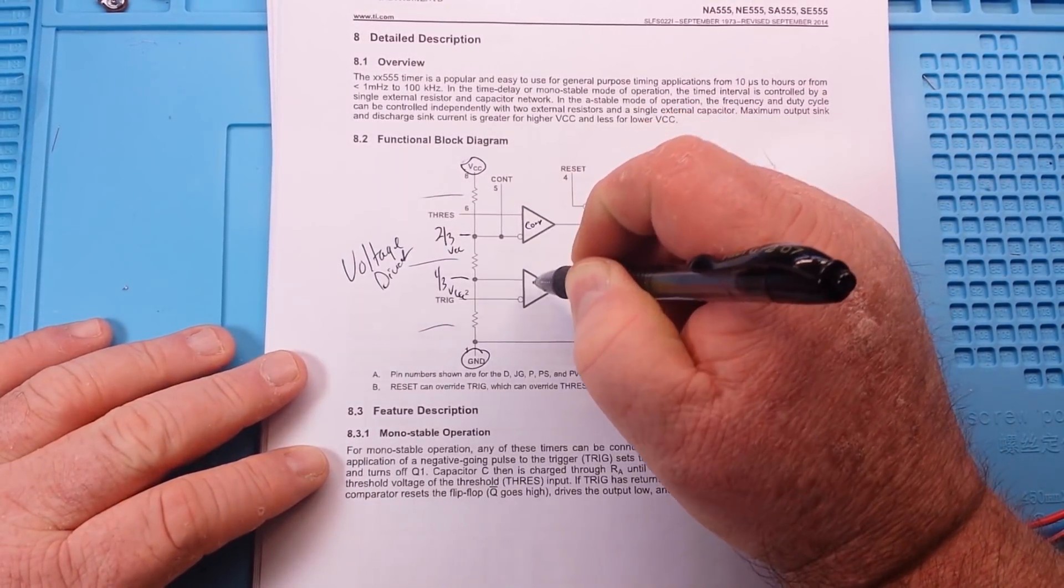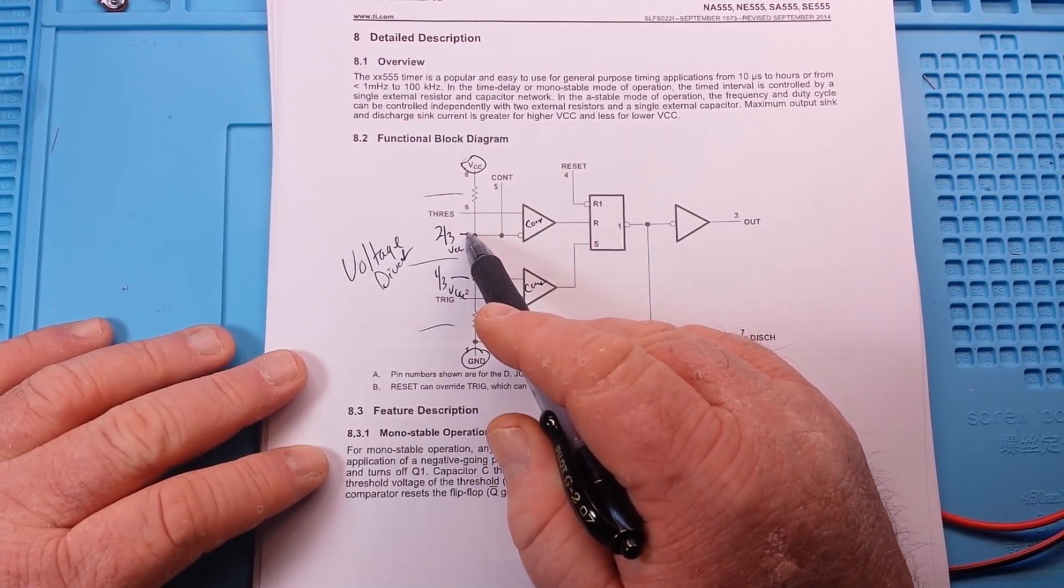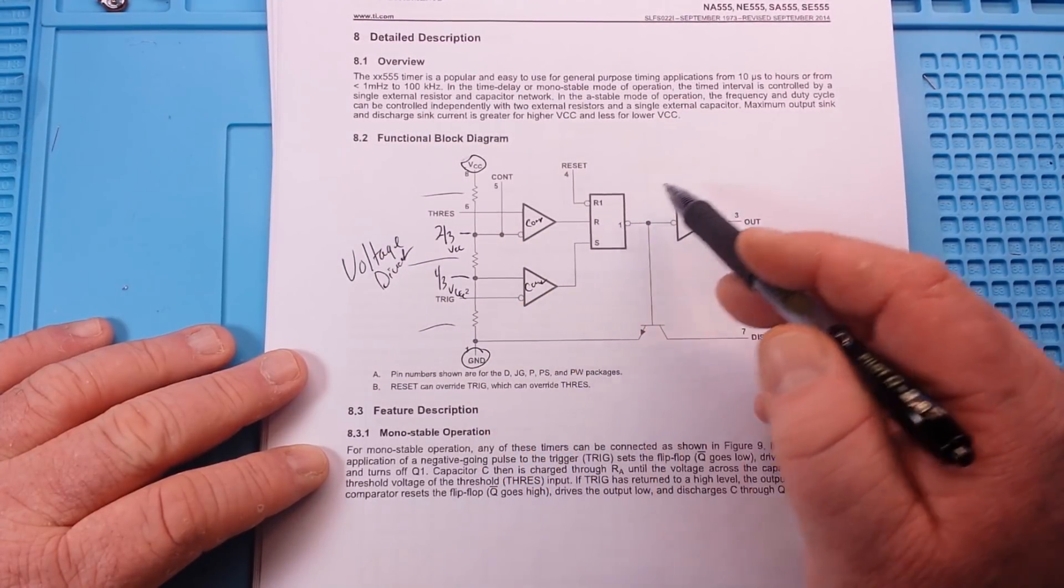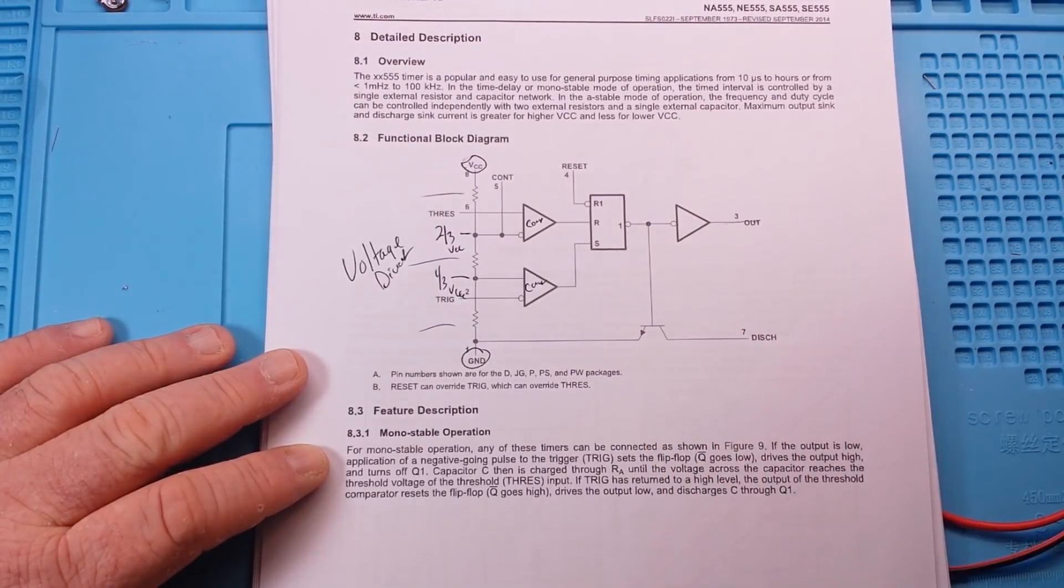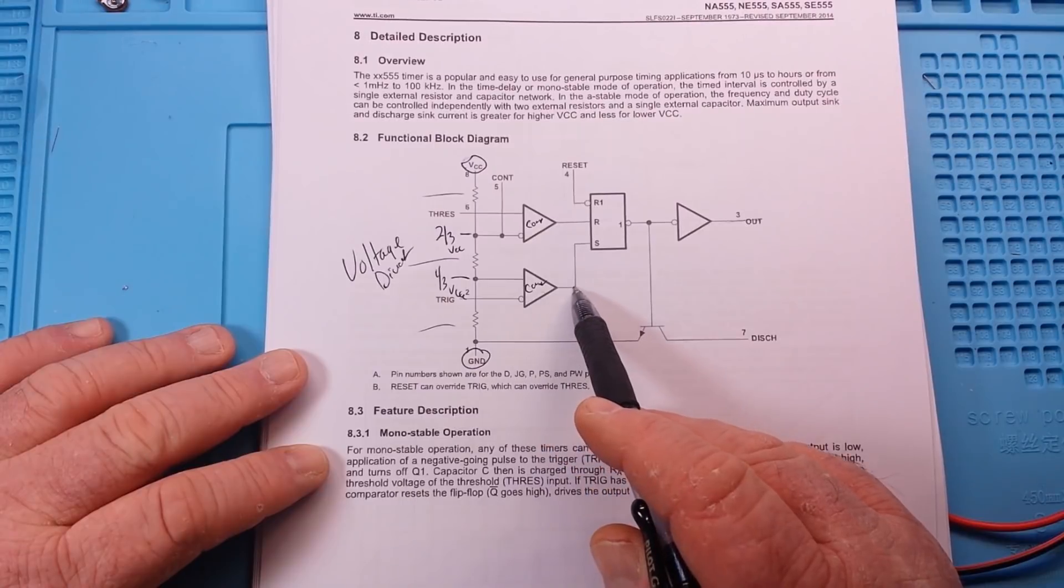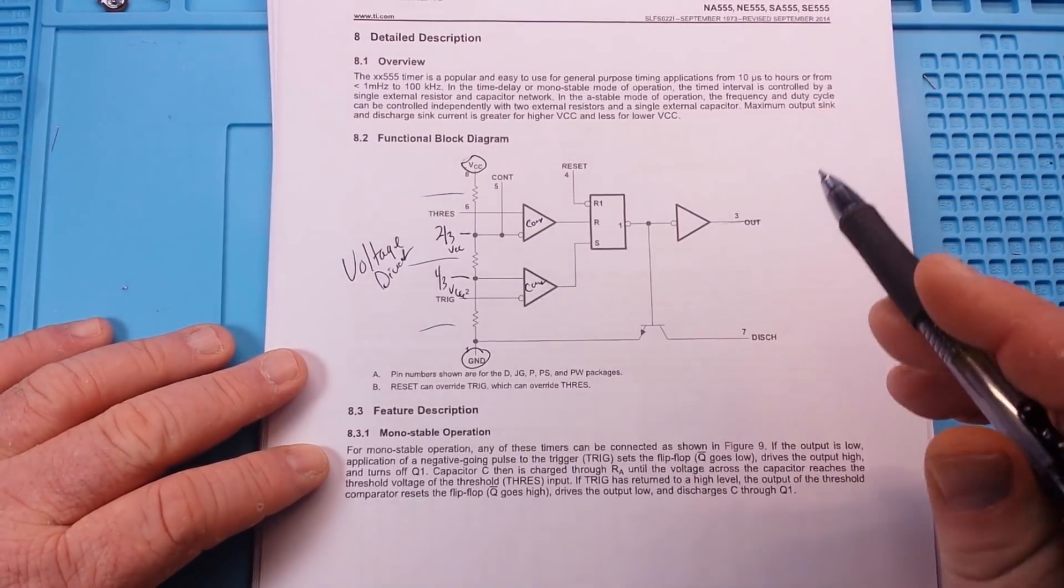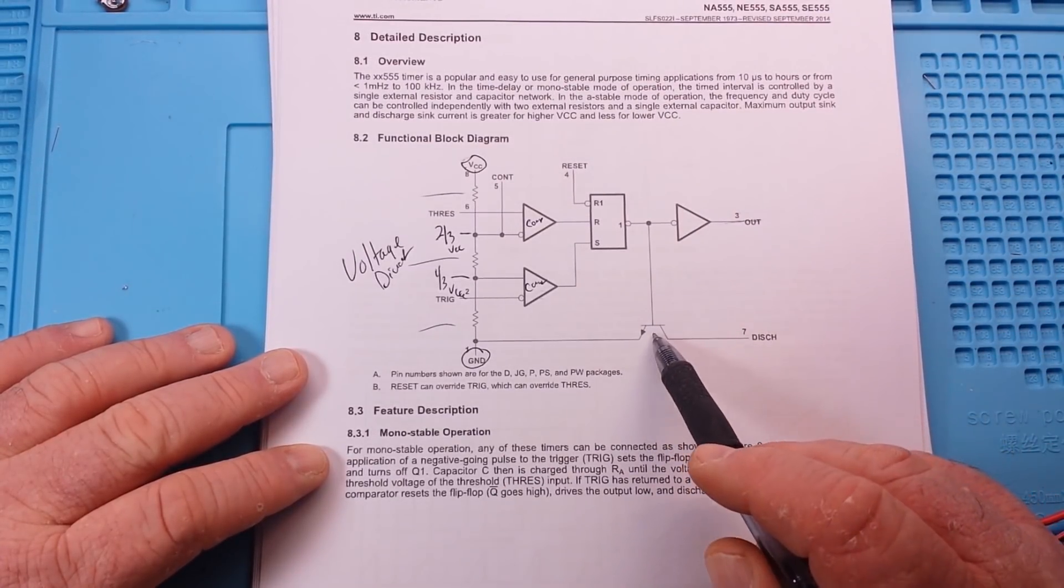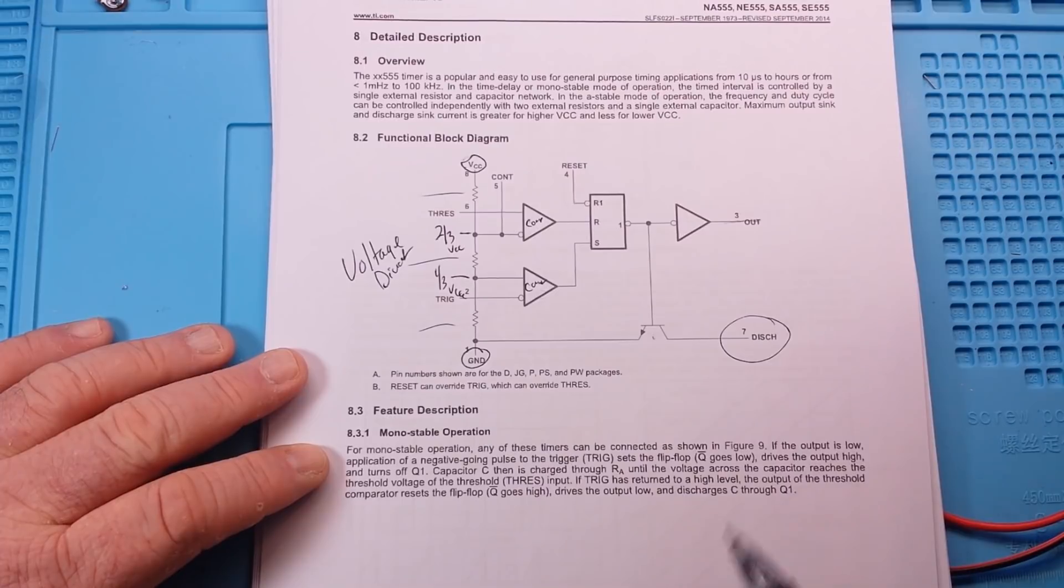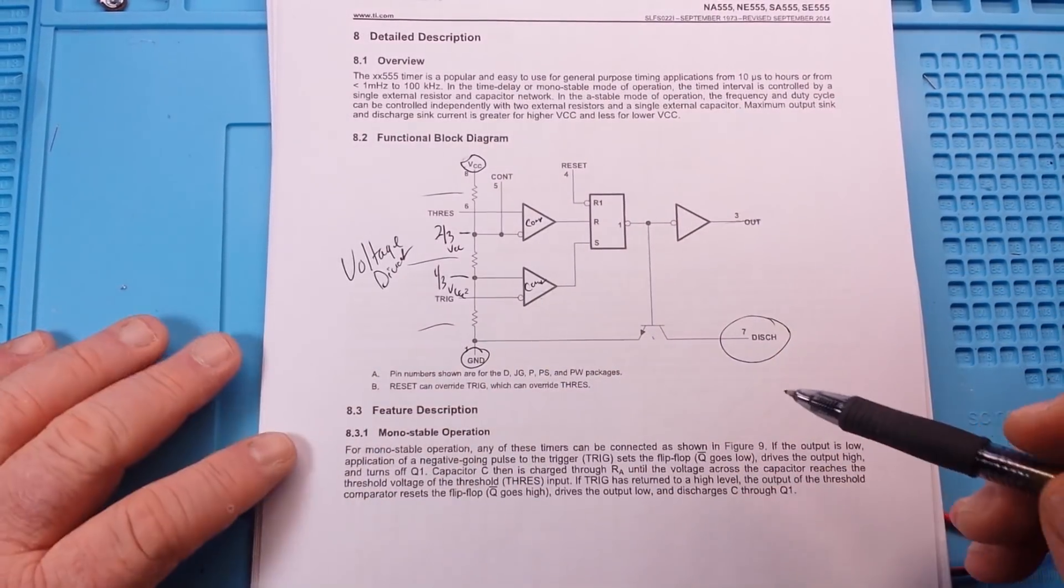Then what we have here are two comparators. When we reach two-thirds of VCC, this comparator fires, drives the output high, and sets a reset latch. Then we have our output driven either high or low. So when we reach one-third VCC, this comparator fires, drives its output high, sets the latch, and then our output goes high or low again, depending on how we have it set up. And then we simply have a transistor here, an NPN-style transistor, on the discharge pin that allows us to discharge our external capacitor. This is brilliant. It's so simple.